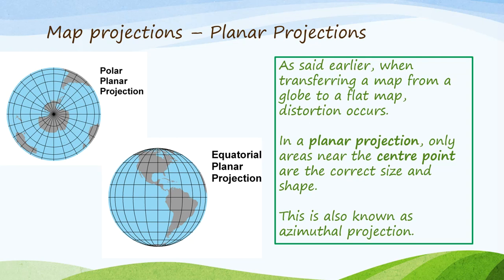Let's look at some different map projection types. Firstly, planar projections. On the left we have a polar planar projection and an equatorial planar projection. A polar planar projection looks down on the earth from the north pole, or up under the earth from the south pole. An equatorial planar projection looks at the earth from the perspective of the equator, which is in the center of the globe, and this is the most common map projection that you will see. When transferring a map from a globe to a flat map, distortion occurs.